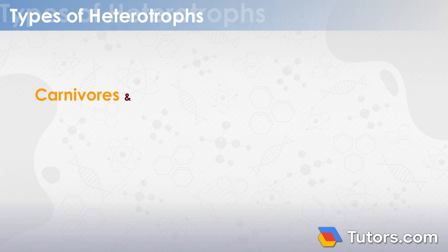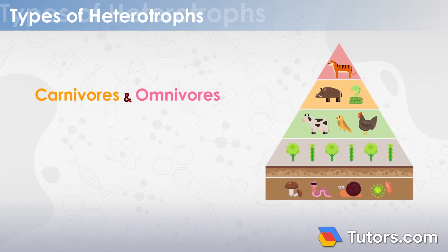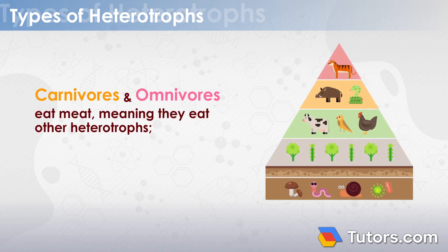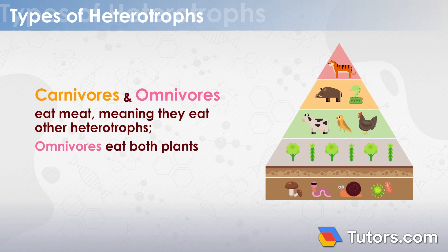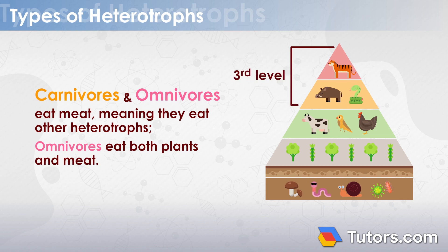Carnivores and omnivores eat meat, meaning they eat other heterotrophs. Omnivores eat both plants and meat, and both types of heterotrophs occupy the third level of food chains.